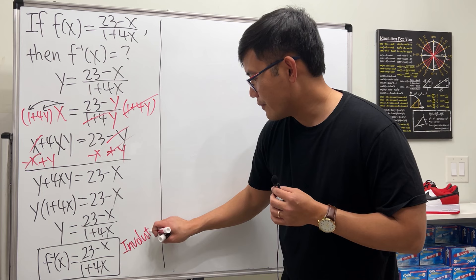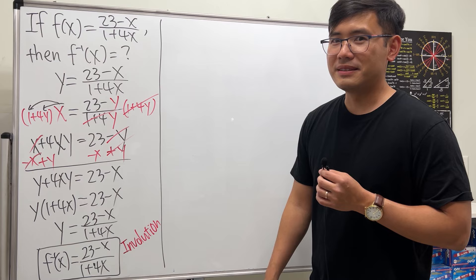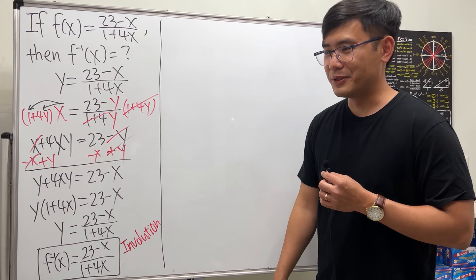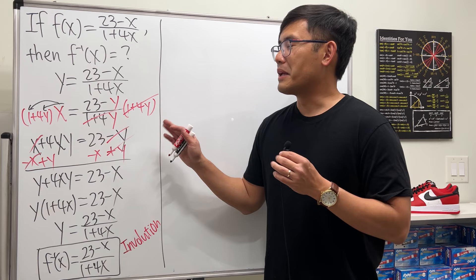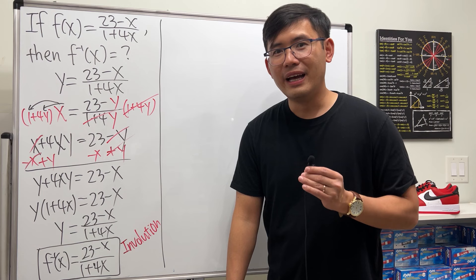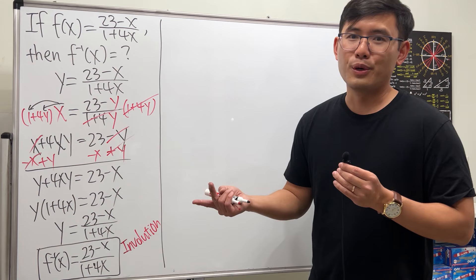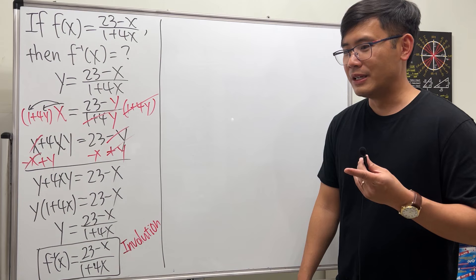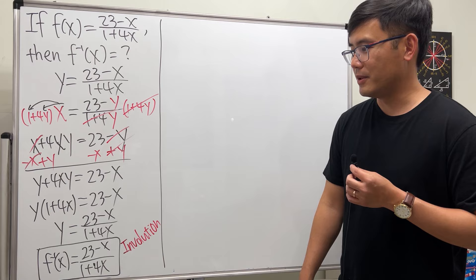Whenever this happens, we call this an involution function. It's probably not the best place to introduce this idea on the last question of a test, but I did give students a practice question with a similar flavor beforehand. On that pre-calculus test I only used the numbers 1, 2, 3, 4, and two zeros.